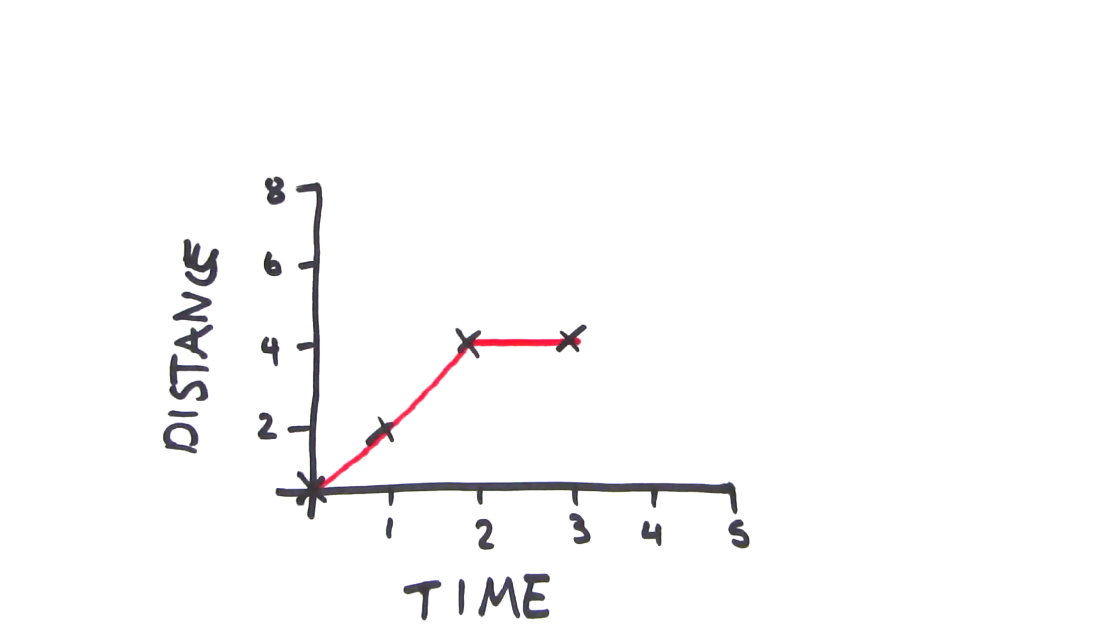If we decide to stop, the line would be flat. Then if we return to our original position, the line slopes back to the origin of the graph.